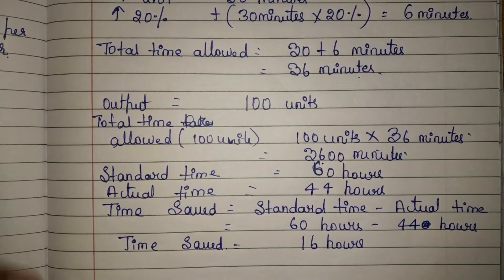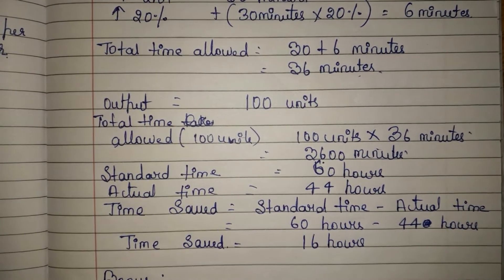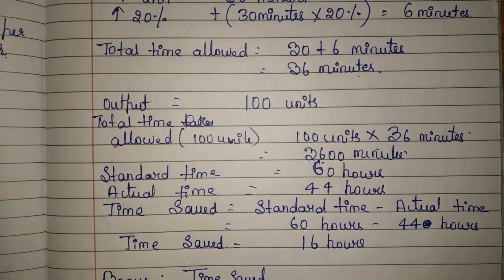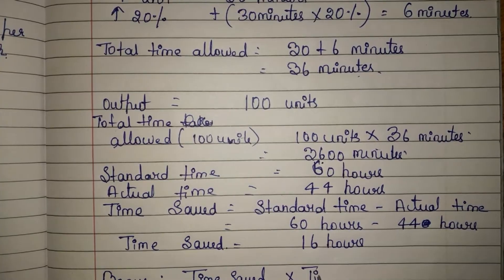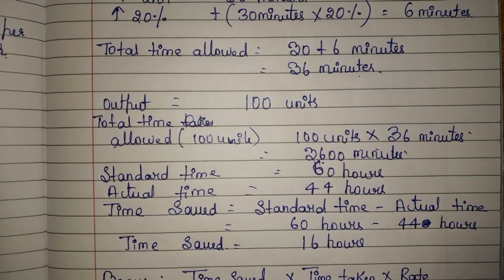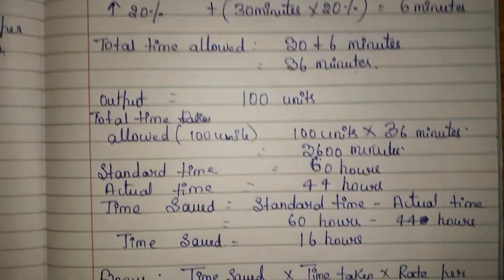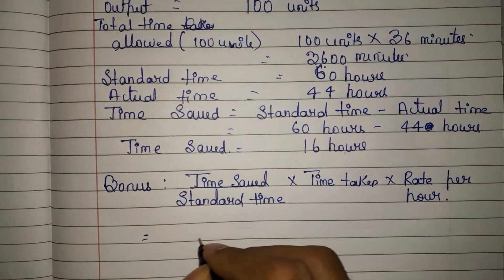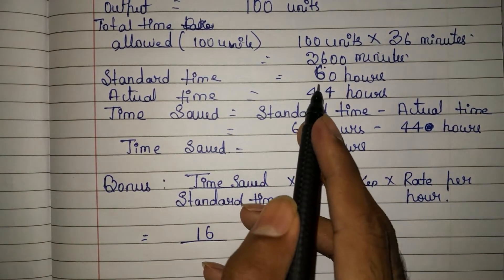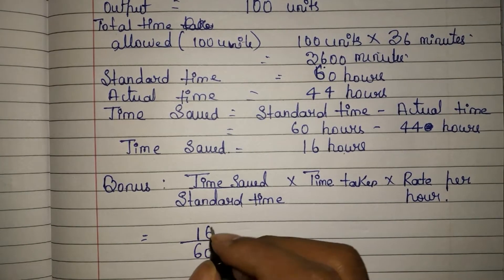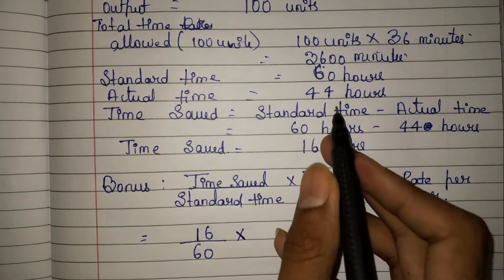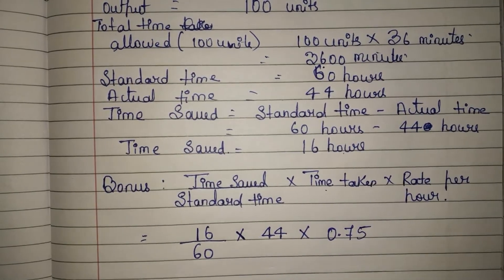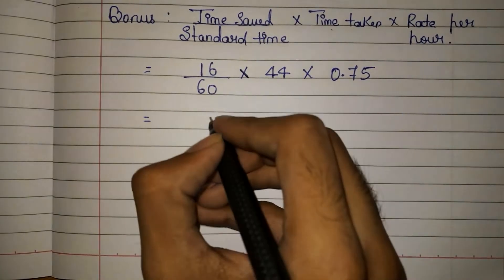Now we need to calculate the bonus. The formula to calculate bonus under Rowan system is: time saved divided by standard time, multiplied by time taken, multiplied by rate per hour. Time saved is 16 hours, divided by standard time of 60 hours, multiplied by time taken of 44 hours, multiplied by rate per hour of 0.75. When you calculate this, you will get 8.80 rupees as the bonus.